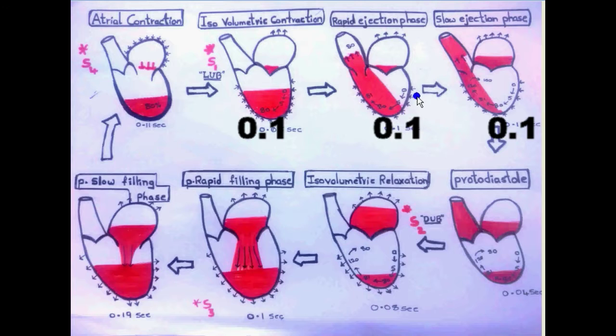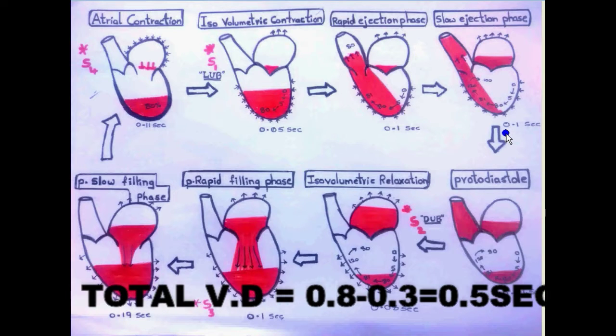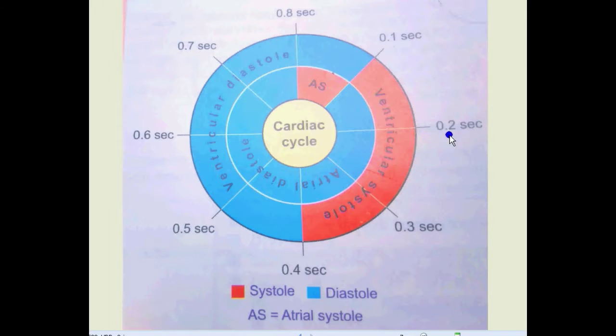Now the time taken for ventricle systole - we have ventricle systole in multiple stages - so in total we have 0.3 seconds. The time taken for total ventricle diastole is 0.8 minus 0.3, that is 0.5 seconds.